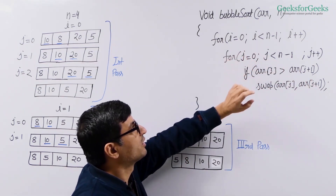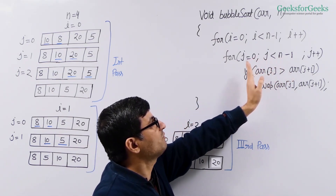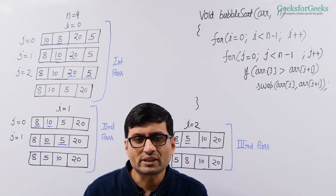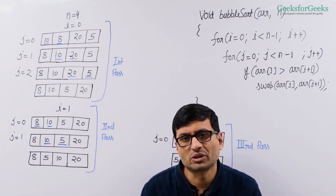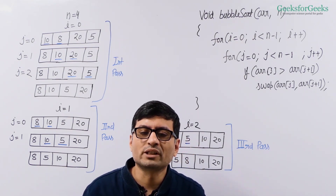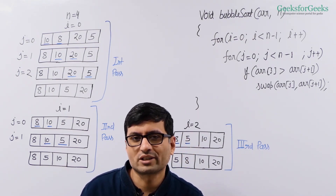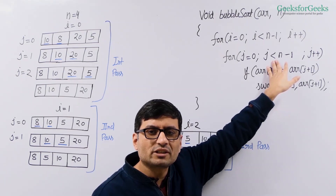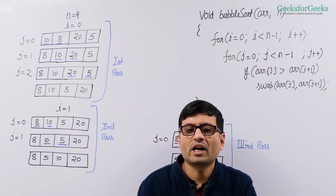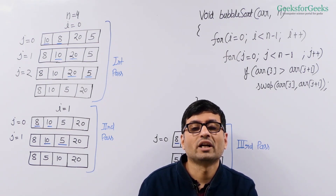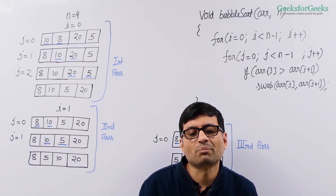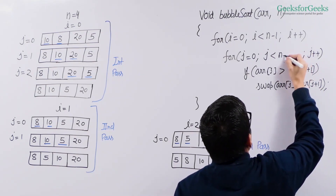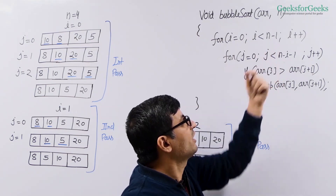Can we optimize this solution further? If you take a look at this loop, we are simply running a loop from j equal to 0 to n minus 1 every time for every pass. After we have run one pass, one element is fixed to the last position — the largest element. After two passes, two elements are fixed at their correct positions as the two largest elements. So using this fact, we can optimize the loop. If we are at the ith iteration, then i elements are already fixed to their last positions. So we run this inner loop only till n minus i minus 1. That is the optimization we can make.